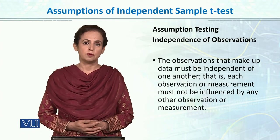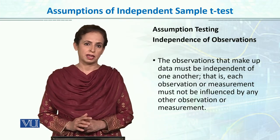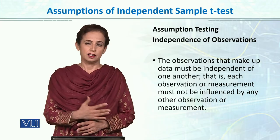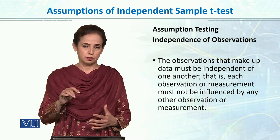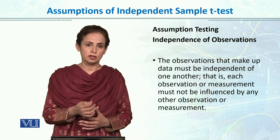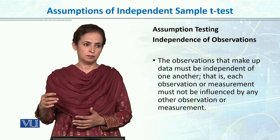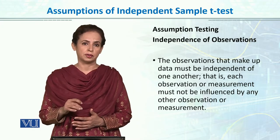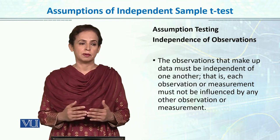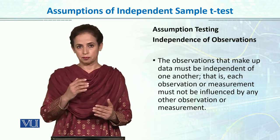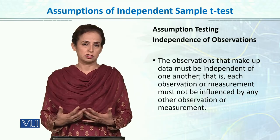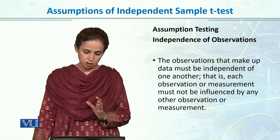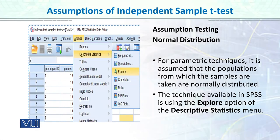The third assumption is independence of observation. All samples and observations within the data are independent of each other — no individual is affected by the presence of another person or sample in the data. In simple words, independent sample means there are different people in the sample who are completely independent. Now let's see in SPSS the first important assumption in parametric testing: normal distribution.